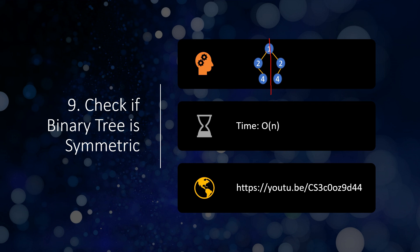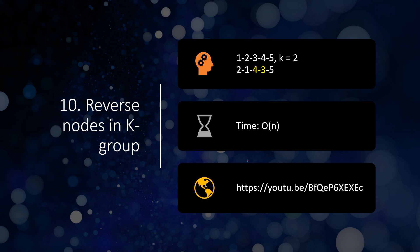The ninth problem is checking if a binary tree is symmetric. If you draw a mirror line through the middle, the left subtree and right subtree should mirror each other. For example, if the left child is 2, the right child should also be 2. At the next level, 4 on the right side of the left subtree must match 4 on the left side of the right subtree. If values differ or positions differ, it is not symmetric. This should be done in O(n) time.